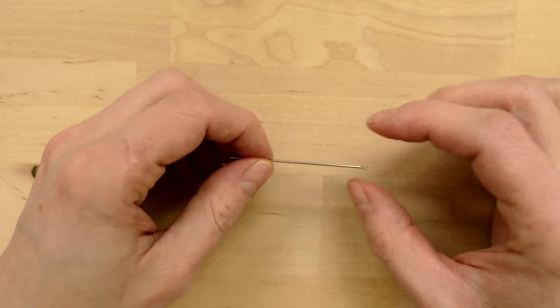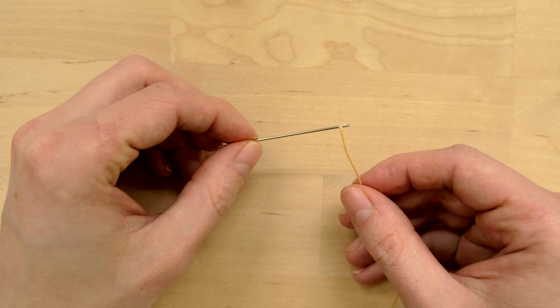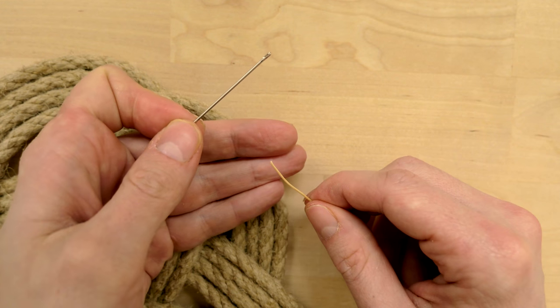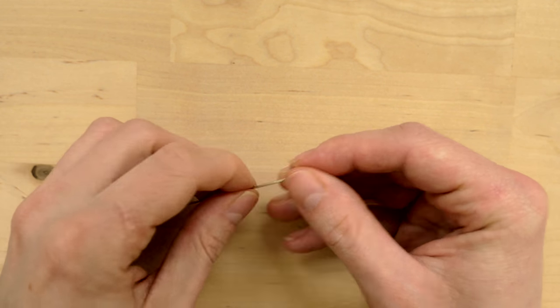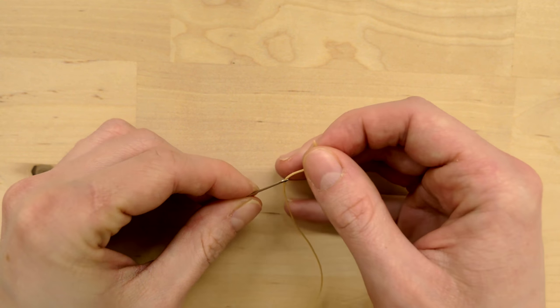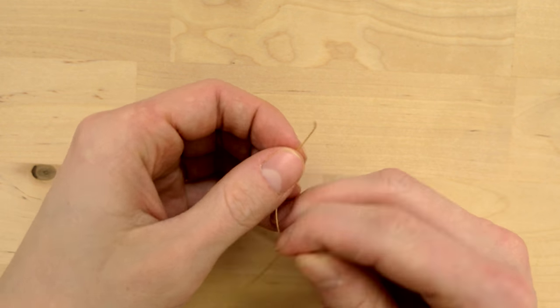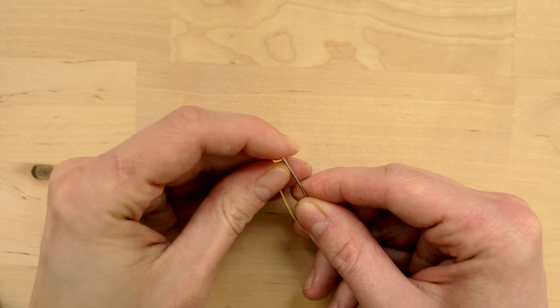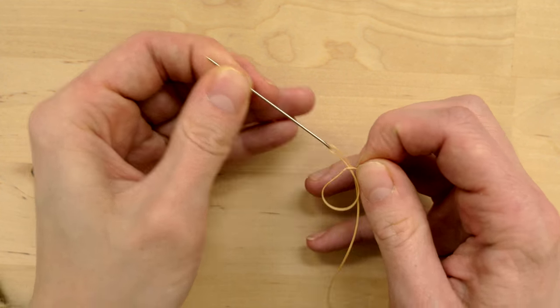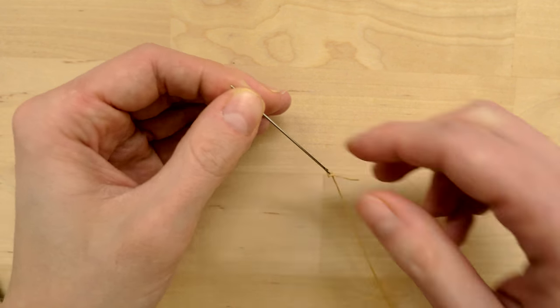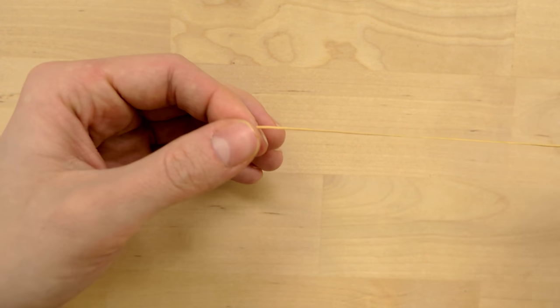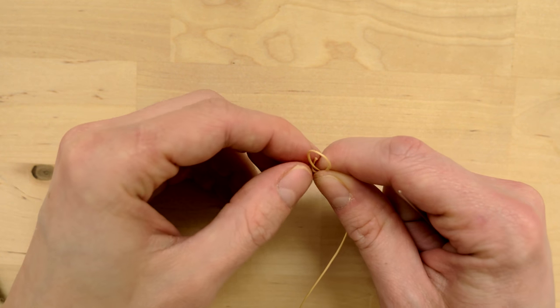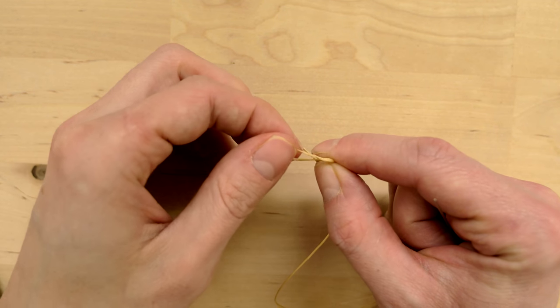You're going to need a simple needle as well as some thread and I recommend that the thread is about the same color as your mat in order to prevent it from sticking out too much. We're first going to thread our needle like this and we're going to pierce our thread using our needle. On the other side, we're going to tie a simple overhand knot in order to prevent our thread from slipping out while we're stitching.